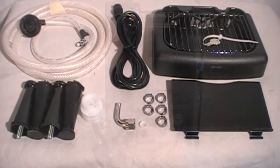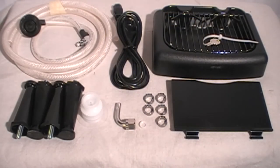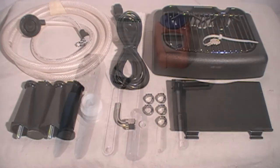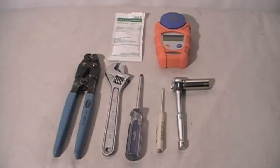The dispenser comes with the components shown as part of the installation kit. Before setting up the Nitro Pro Mini dispenser, make sure to have the necessary tools shown: a Phillips and straight tip screwdriver, adjustable wrench, 9/16th socket wrench, and a clamp crimping tool.